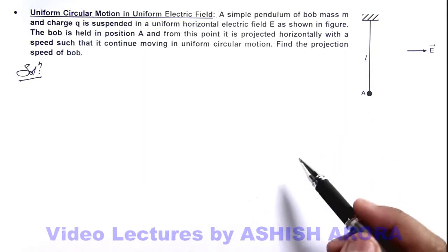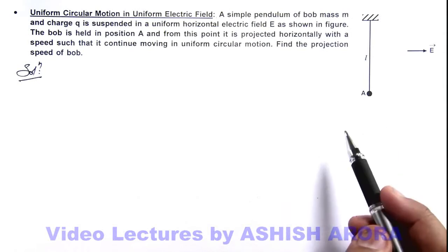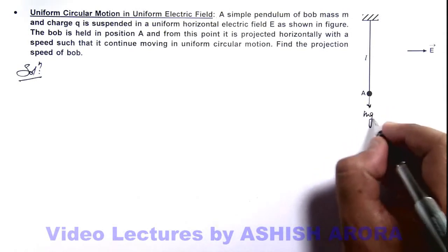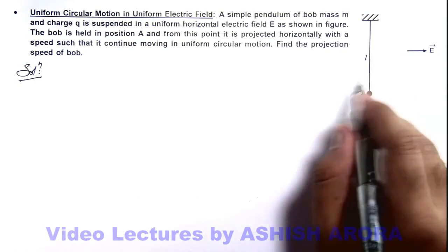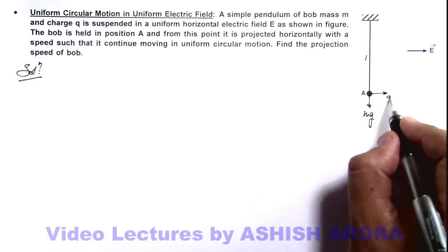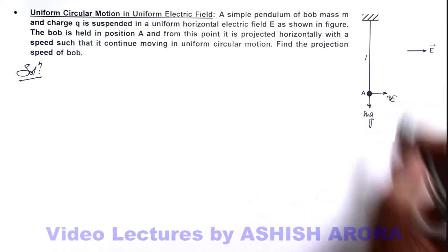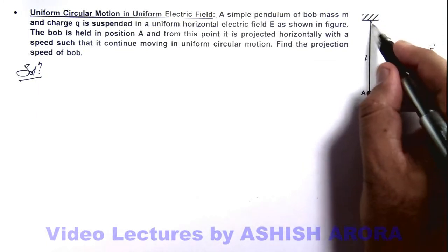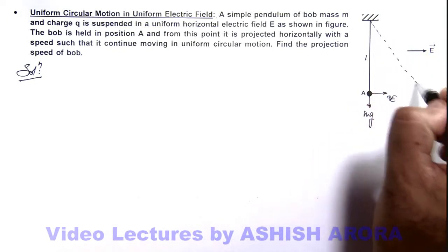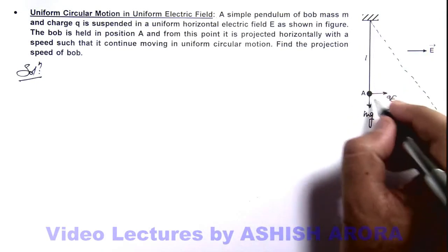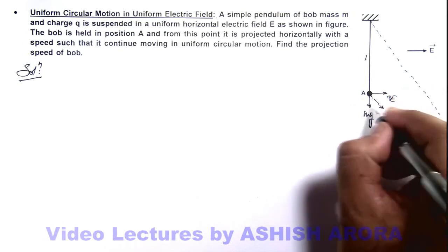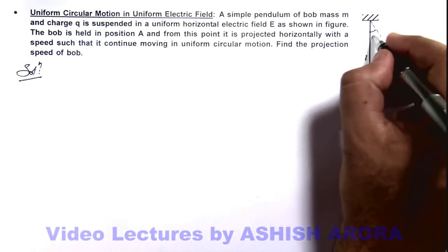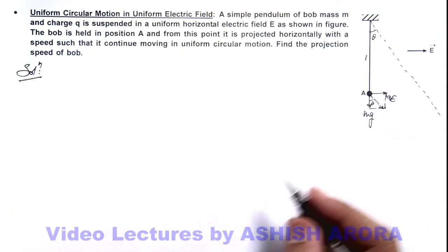Here we can analyze the similar case. The bob is experiencing gravity mg in downward direction. It'll be experiencing a force qE due to the electric field. So due to this the resulting equilibrium position of the bob would be somewhere along this line, which is along the line of the resultant of these two forces acting on it. If this angle is theta, this can also be written as theta.